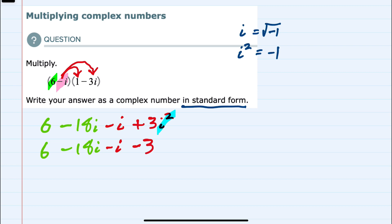From here, we can combine like terms. Keeping it in standard form, we would do the rational numbers first. So 6 and a negative 3 can be combined. 6 plus negative 3 is 3.